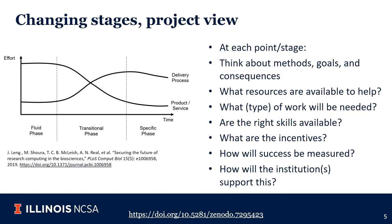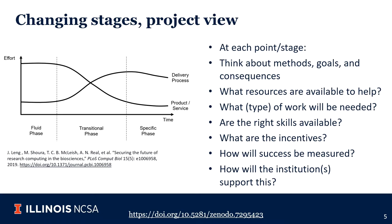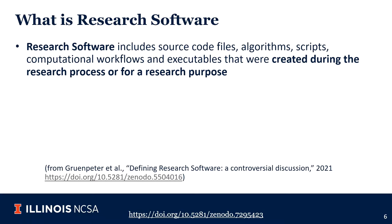Stepping back, let me define what research software really is. Research software includes source code, algorithms, scripts, and other things created during the research process or for a research purpose. There's also other software that's important in research but is not research software — things like operating systems, libraries, dependencies, packages, and scripts. We are calling these 'software in research' but not 'research software.'